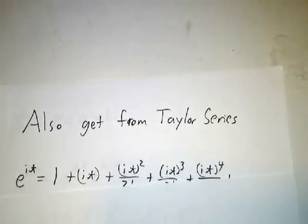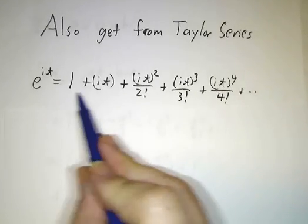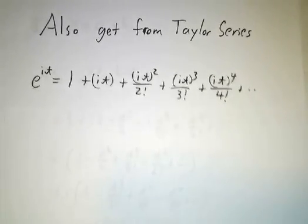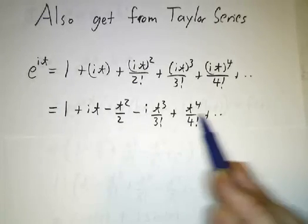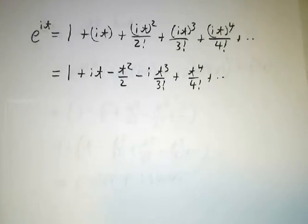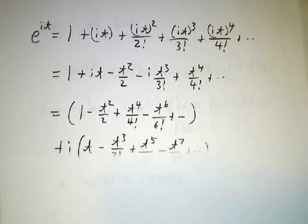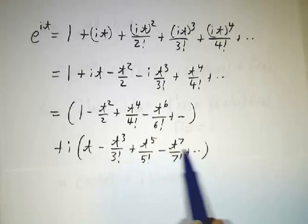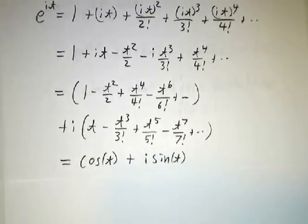And in general, we could have gotten the same result from the Taylor series. If you write out the Taylor series with an it in there, if you expand it out, you have a bunch of i's in all the odd terms. And you discover that the real part is just the Taylor series for cos, and the imaginary part is the Taylor series for sin. And then you get cos plus i sin.